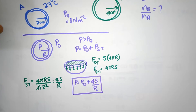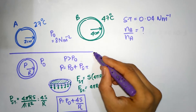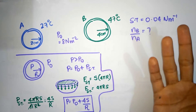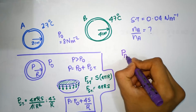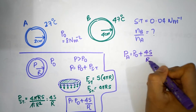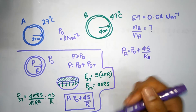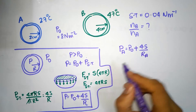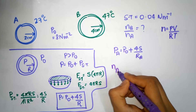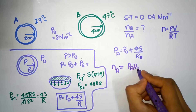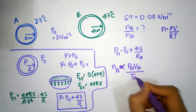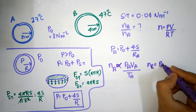That's the equation for pressure. Now we can write the pressure inside bubble A as P_A = P₀ + 4S/r_A. To calculate n_A, we use the ideal gas equation PV = nRT, so n = PV/RT. Therefore, n_A is proportional to P_A times Volume_A divided by T_A.